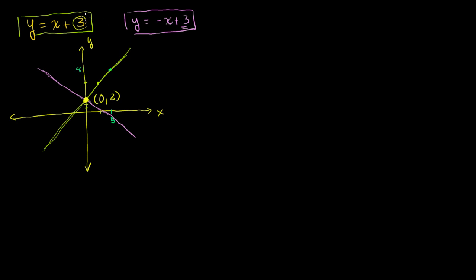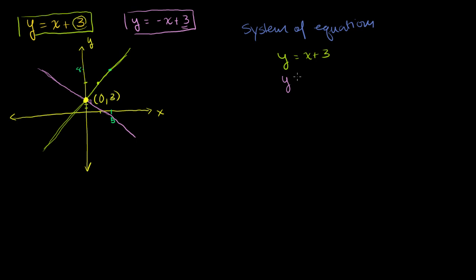It satisfies both of these equations. So what we just did, in a graphical way, is solve a system of equations. All that means is we have several equations — each of them constrain our x's and y's. The first one is y is equal to x plus 3, and the second is y is equal to negative x plus 3. Each constrains the solution set to a line in the xy-plane, and if we want to know the x's and y's that satisfy both, it's going to be the intersection of those lines.